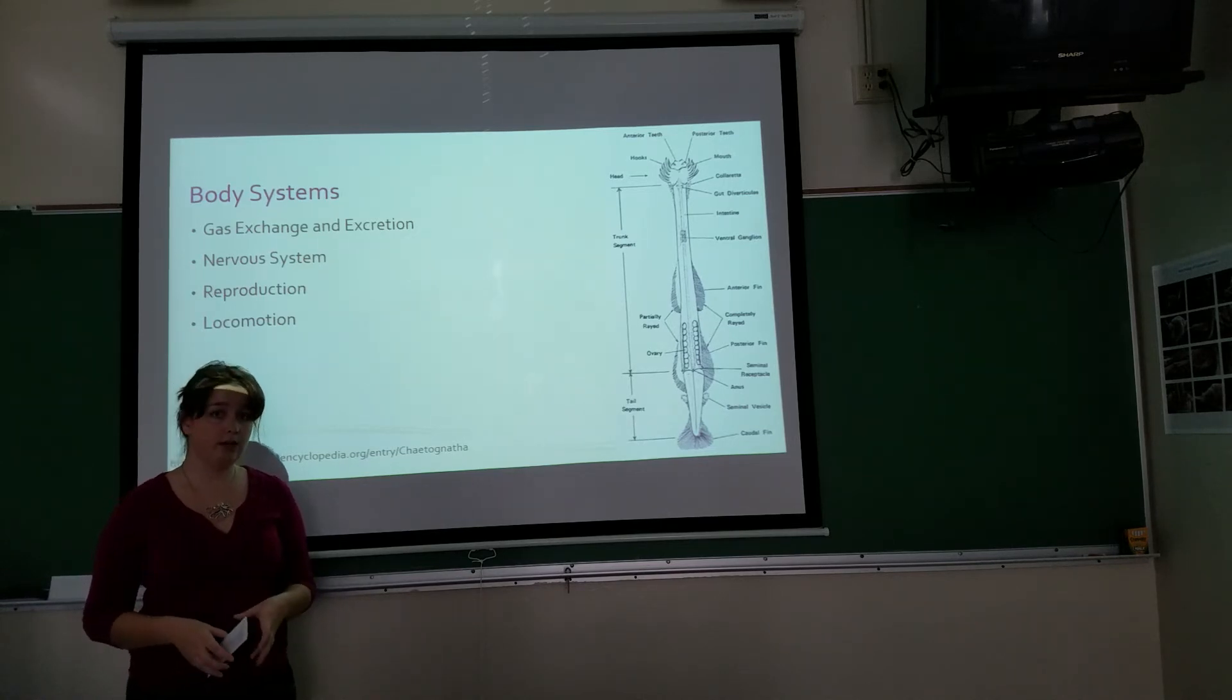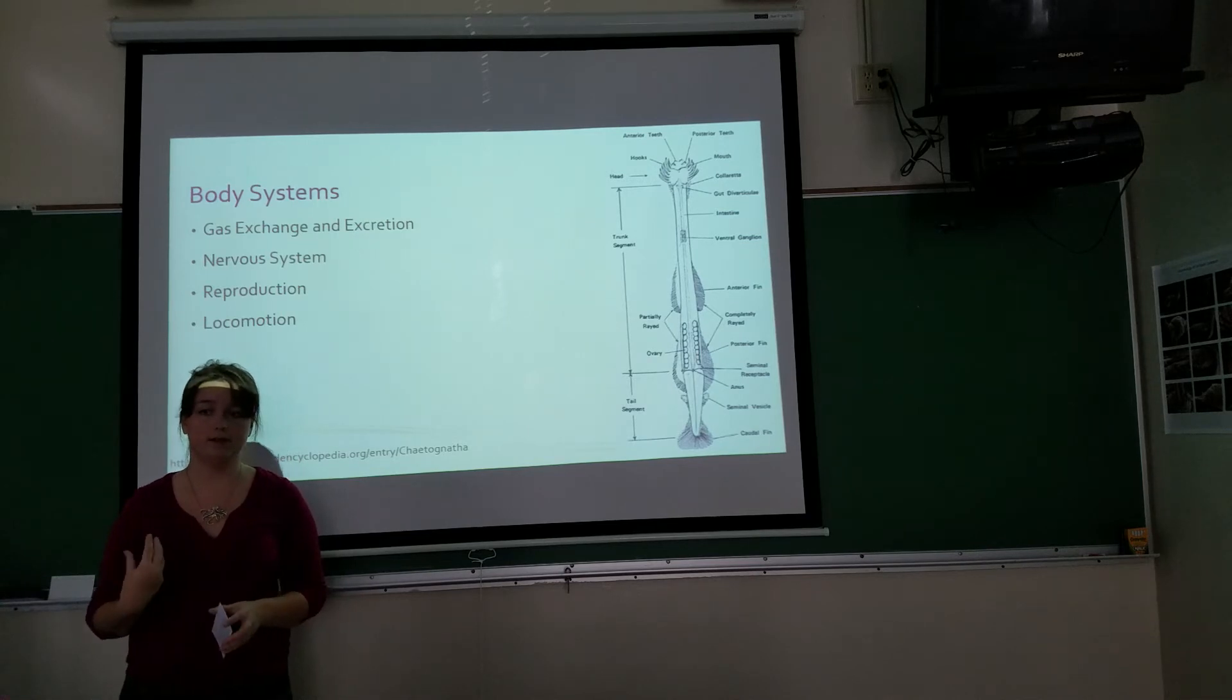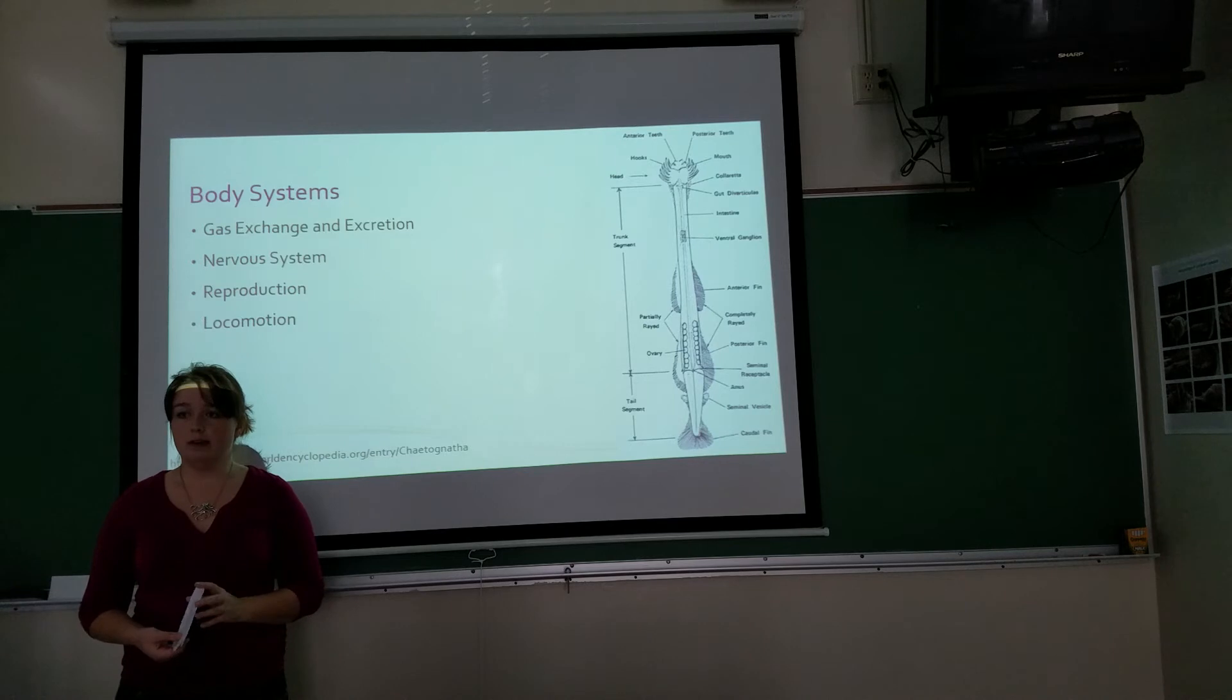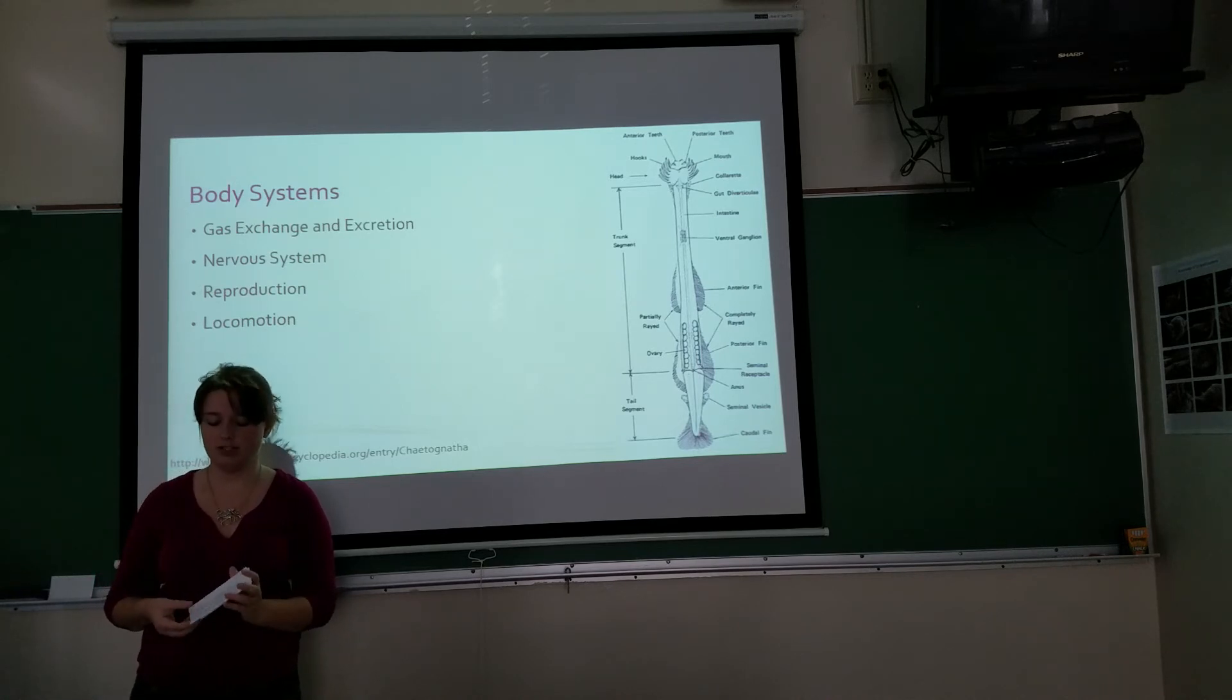They also have mechanoreceptors. They're hairs on the side of the body, which work similar to the lateral line. And they can detect the movement and the location of prey items. In addition to all of this, it's thought that they probably have chemoreception. However, there's been no hard evidence of chemoreception in this group.